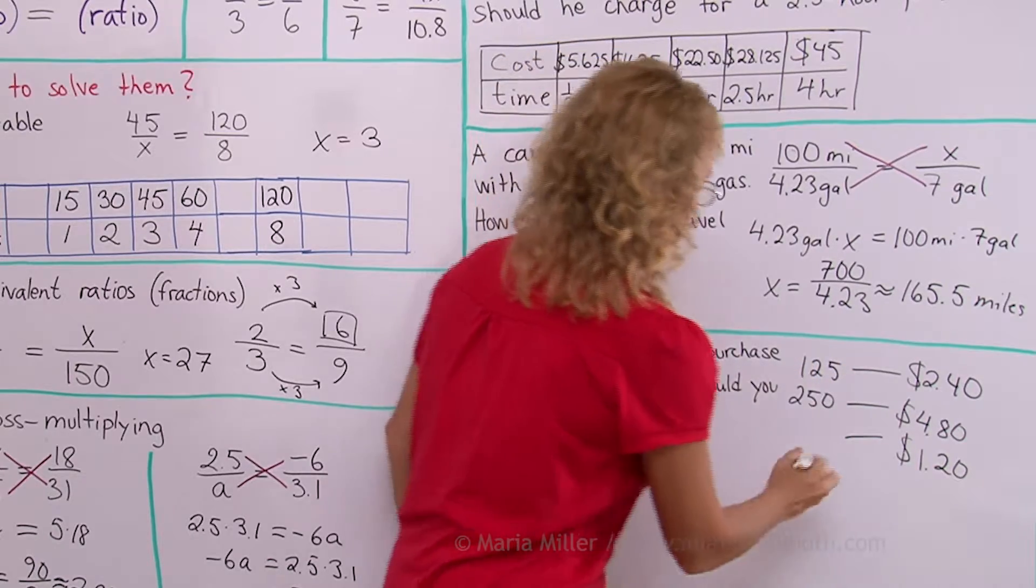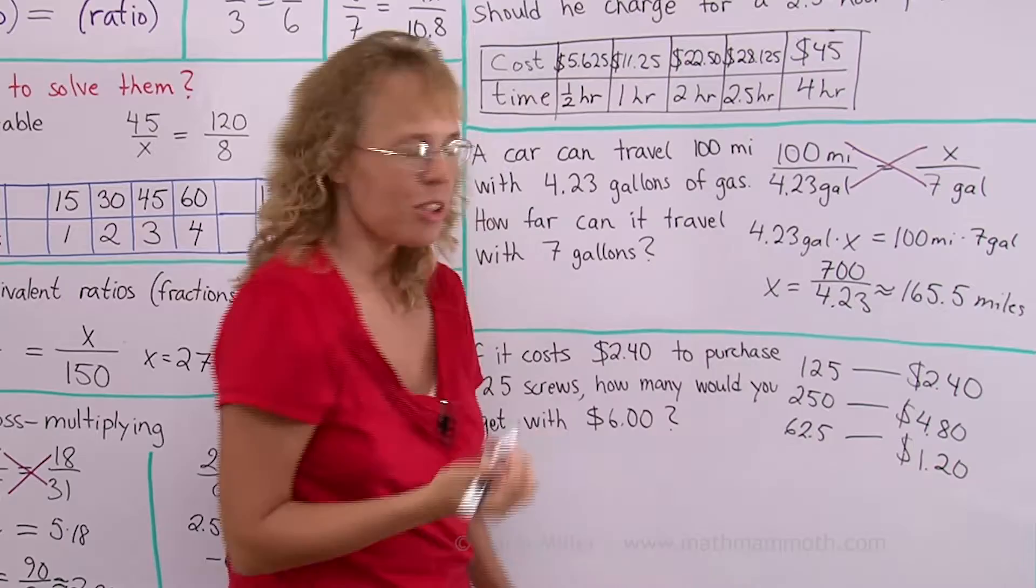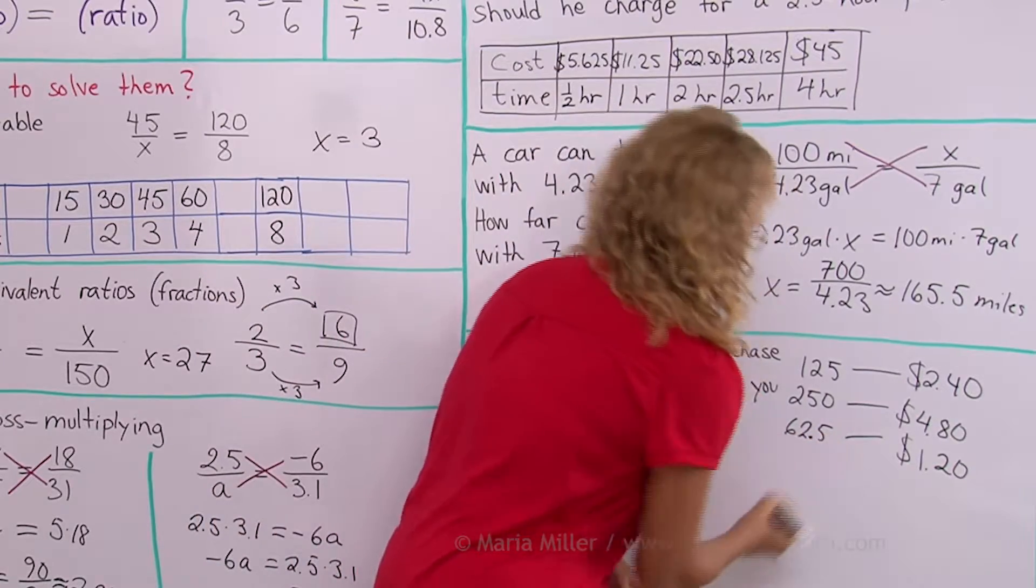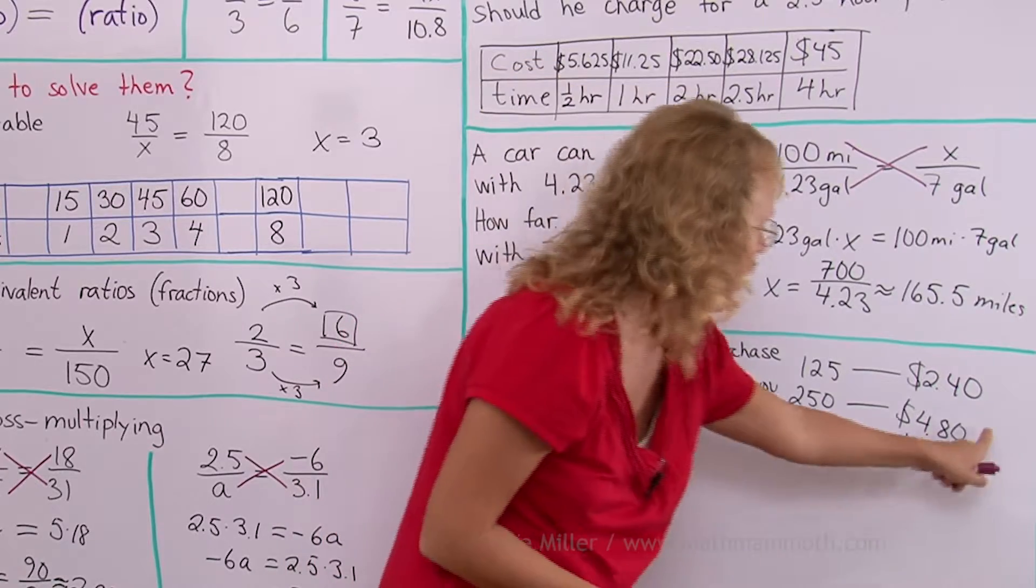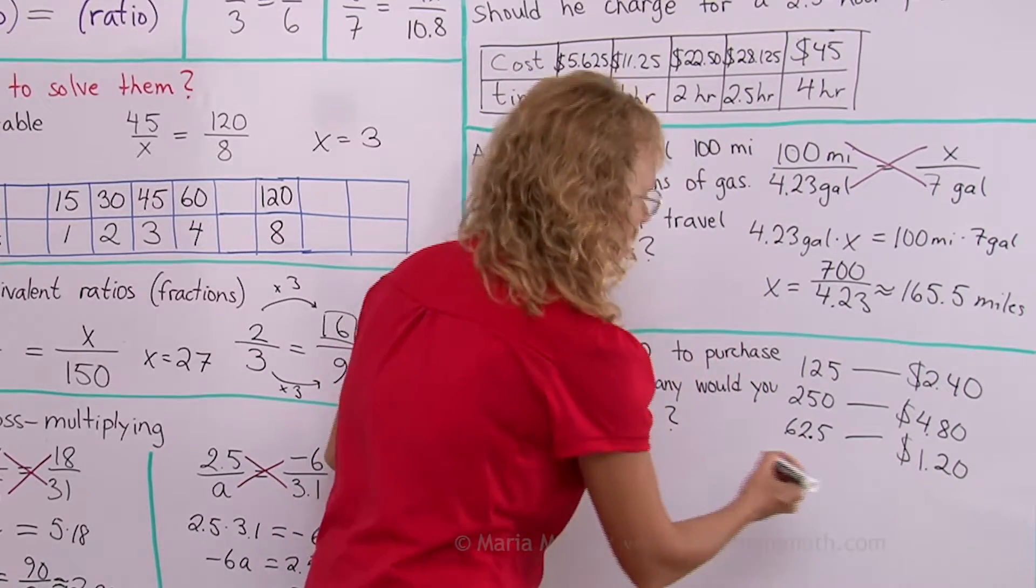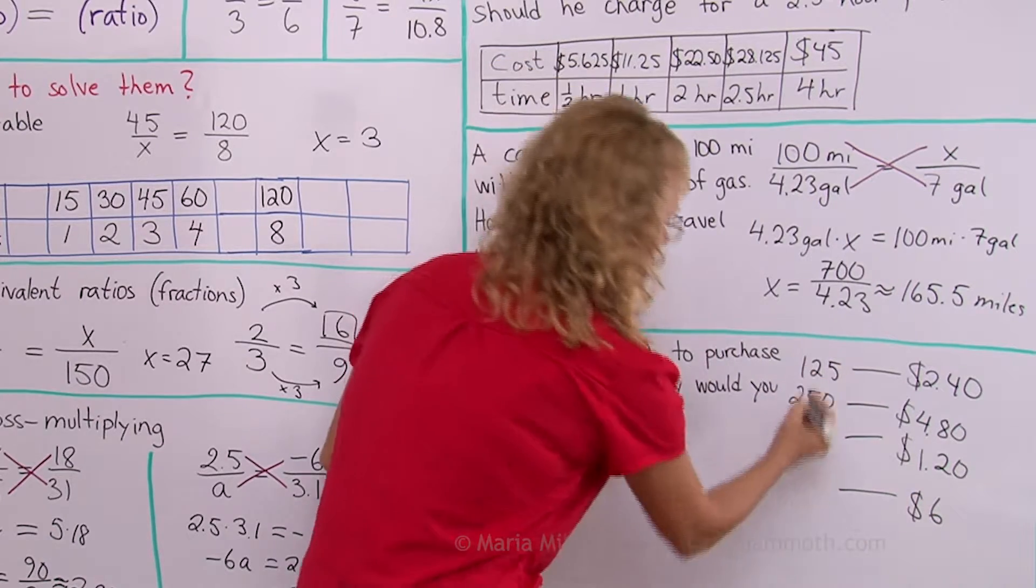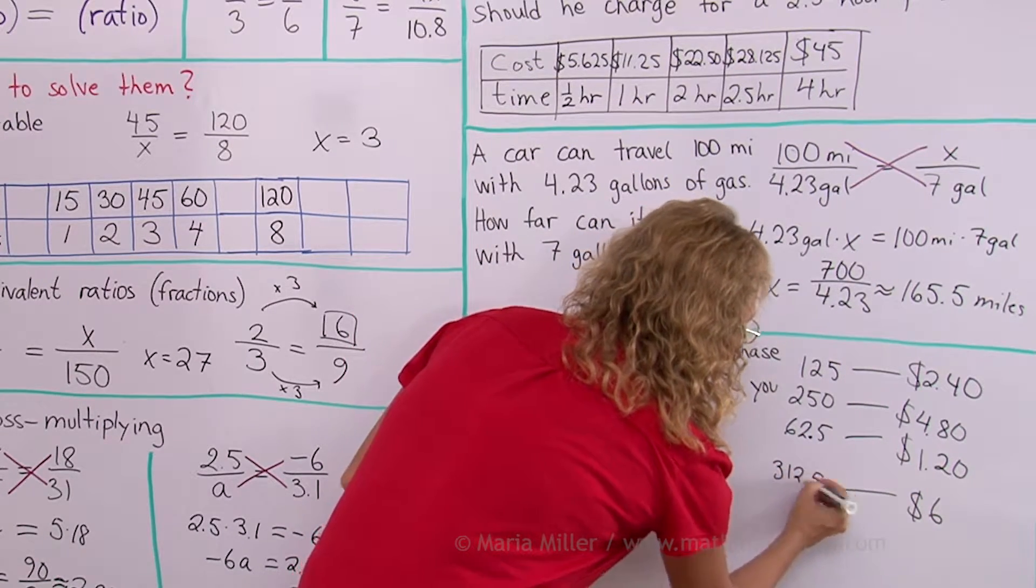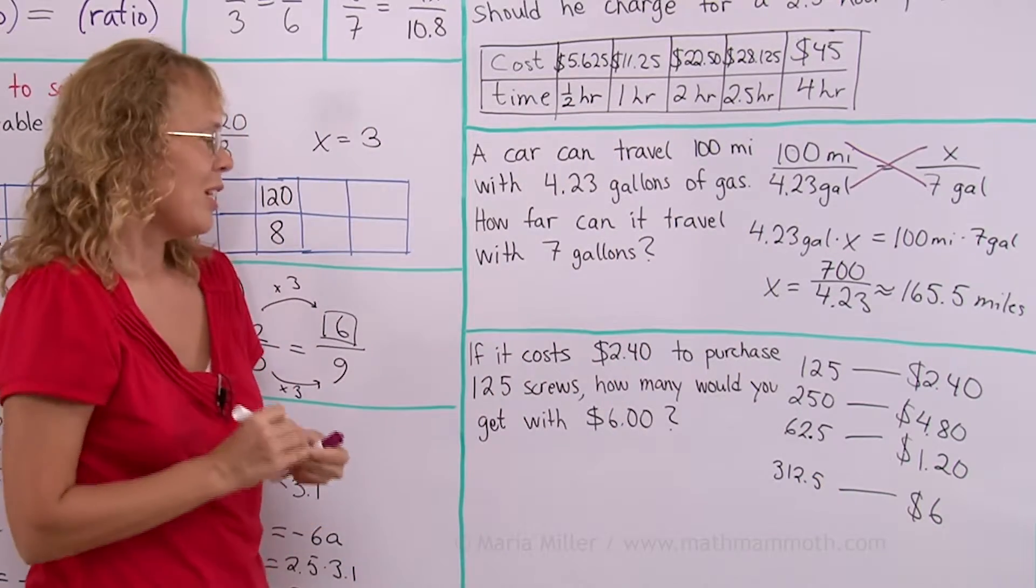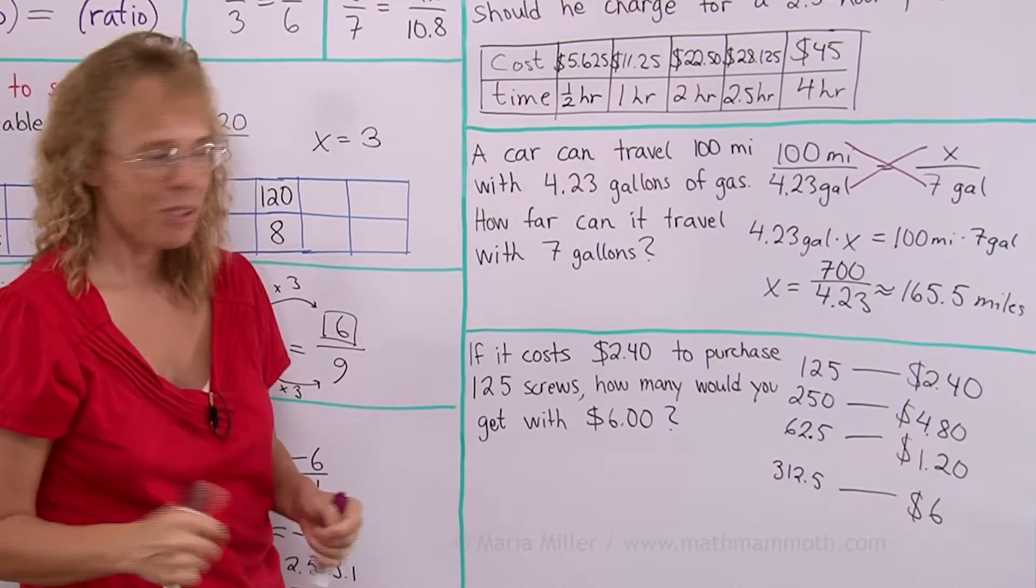If I take half of this which is 62 and a half screws. I know you can't get half of a screw but anyway. Let's keep it here for the calculation for now. And now I add these two last ones that I have to get $6 here and then add these two and we will get 312 and a half screws which if you are the merchant you need to either round it to 312 or 313 screws.